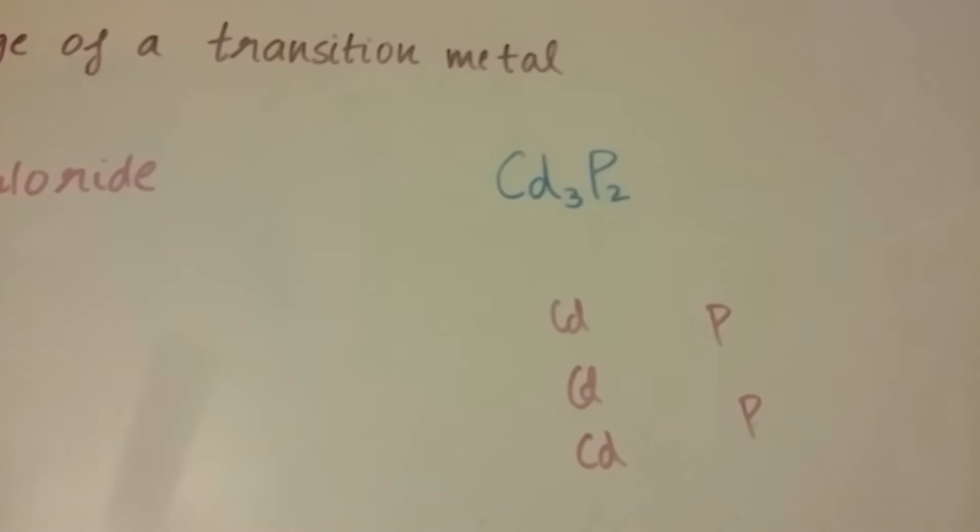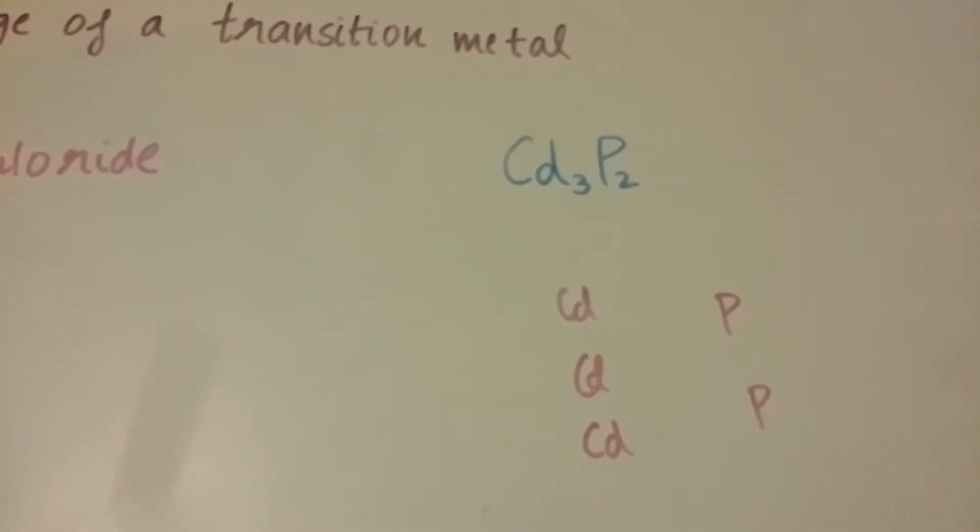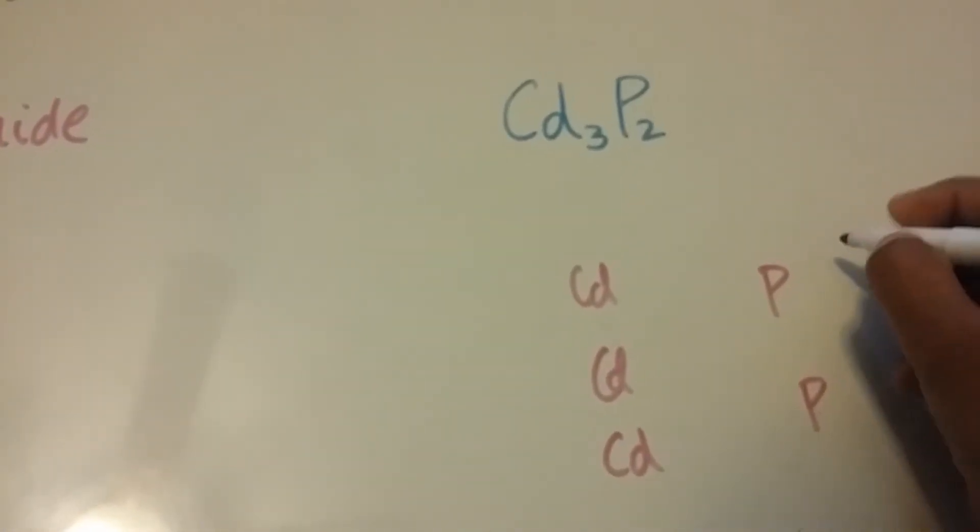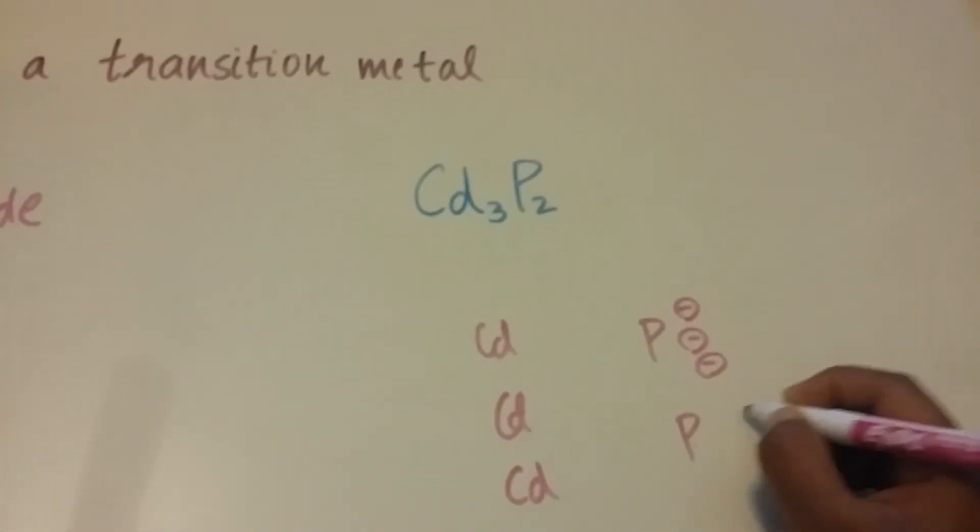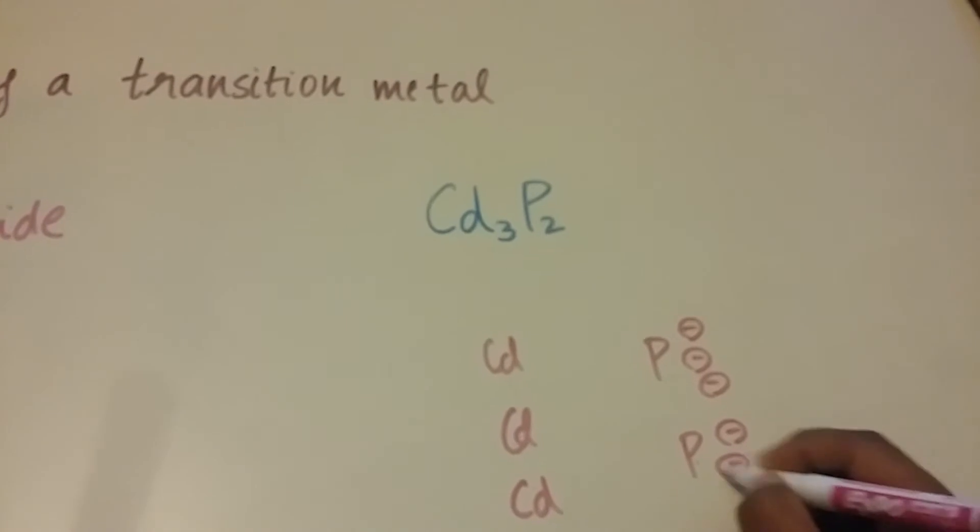And we know phosphorus has a charge of three minus. So that would be three negative charges over here, and three more negative charges over here.